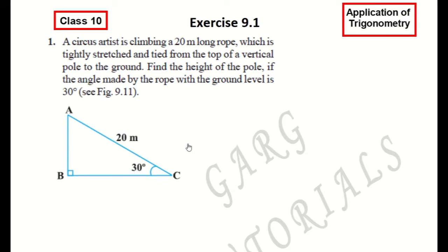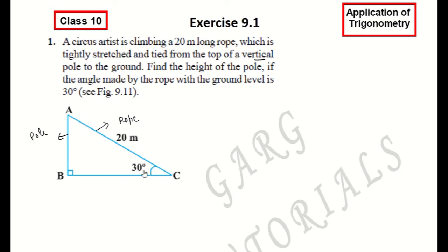A circus artist is climbing on a rope. This is AC, the rope, and AB is our pole — the pole is vertical. AC, which is a 20-meter long rope, makes a 30-degree angle with the ground. What we need to find is the height of the pole.